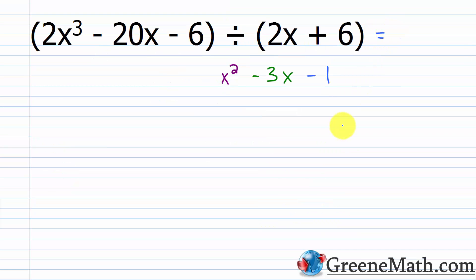I like to check things. Your quotient times your divisor should give your dividend back. So let's multiply 2x plus 6 times x squared minus 3x minus 1. 2x times x squared is 2x cubed, 2x times negative 3x is minus 6x squared, and 2x times negative 1 is minus 2x. Then 6 times x squared is plus 6x squared, 6 times negative 3x is minus 18x, and 6 times negative 1 is minus 6.